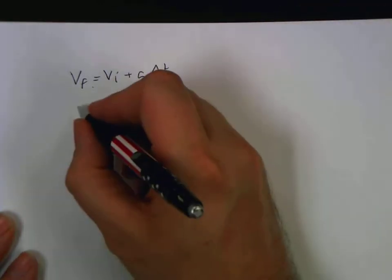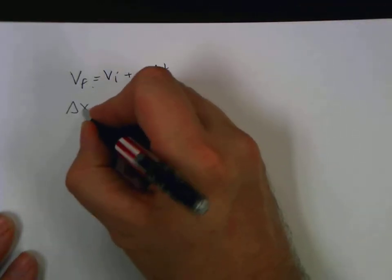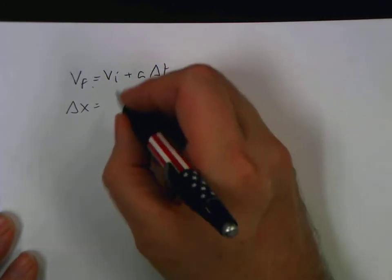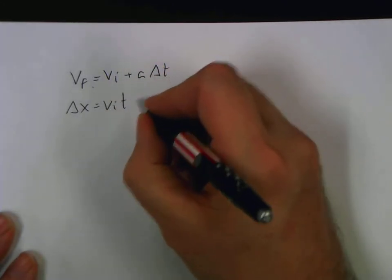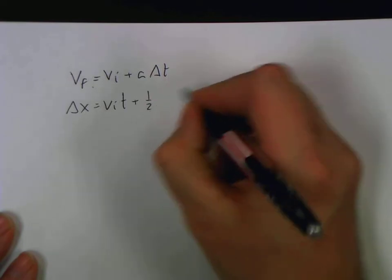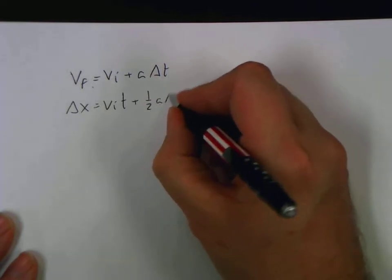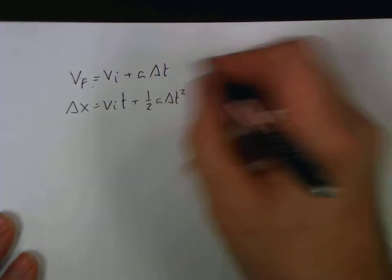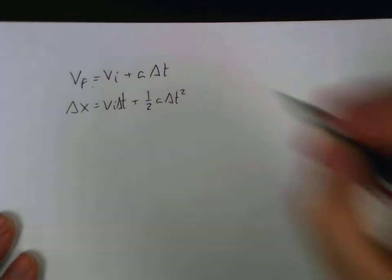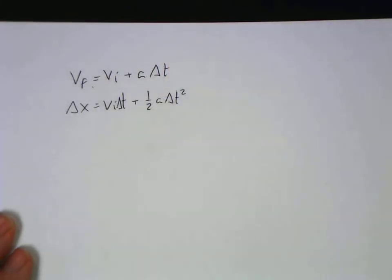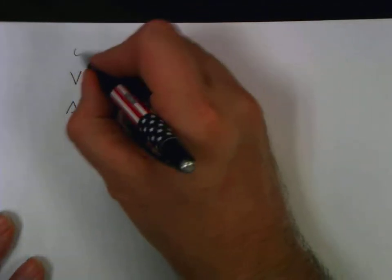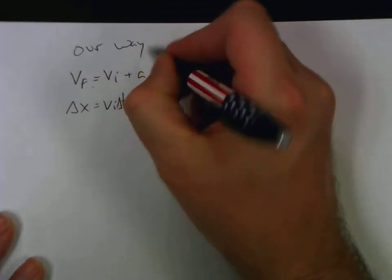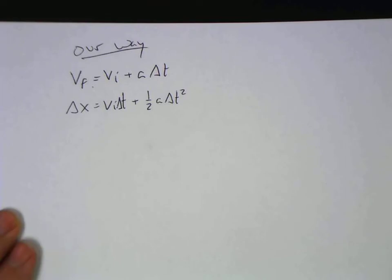And delta x, which is displacement, is equal to the initial velocity multiplied by time plus one half the acceleration multiplied by our time duration squared. Technically this is supposed to have a delta on it, but I'm lazy and forget those sometimes.